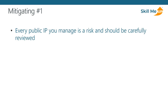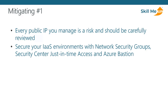How do we fix that? First, you should consider every public IP address assigned to your resources and cloud services a risk. Carefully review whether you really need a publicly available endpoint or a public IP resource in your infrastructure as a service in Azure. If you are adamant that you do, then for your IaaS environments you should look at native network security groups and Security Center's just-in-time access to limit access with allow-deny rule sets that act as access control lists.